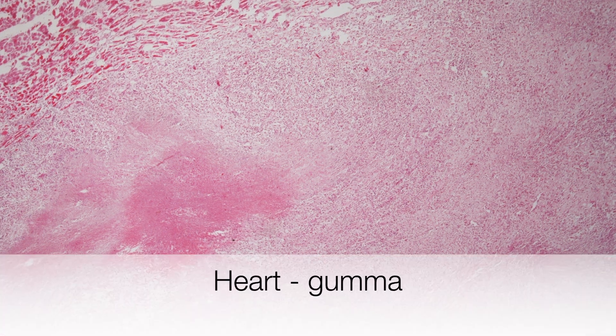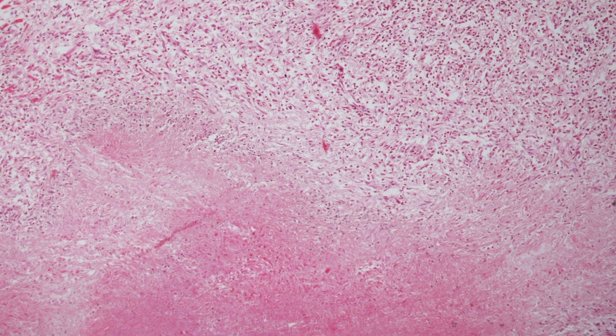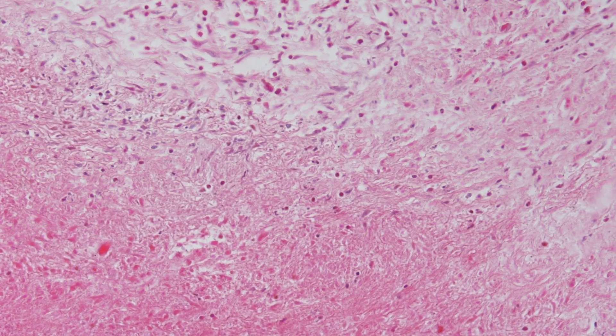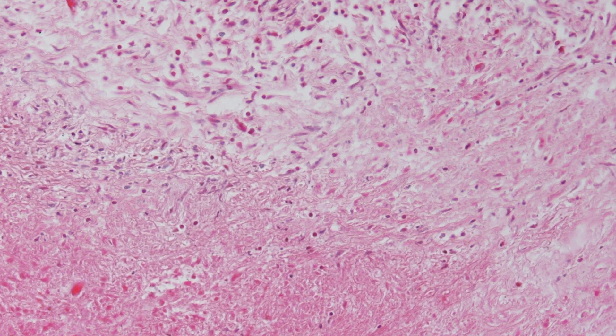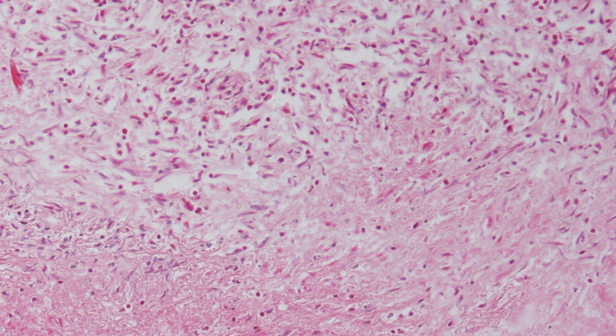Here is a gumma affecting the heart; it is in the myocardium. The dark red area at the centre of the gumma is an area of coagulative necrosis, and the coagulative necrosis is surrounded by a fibrous wall containing fibroblasts, plasma cells, lymphocytes, epithelioid cells and macrophages. Here is a gumma of the testis.